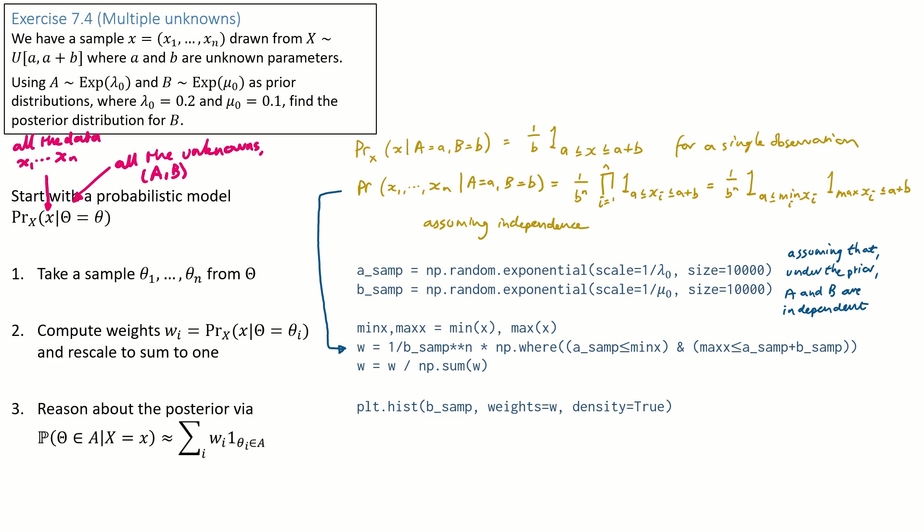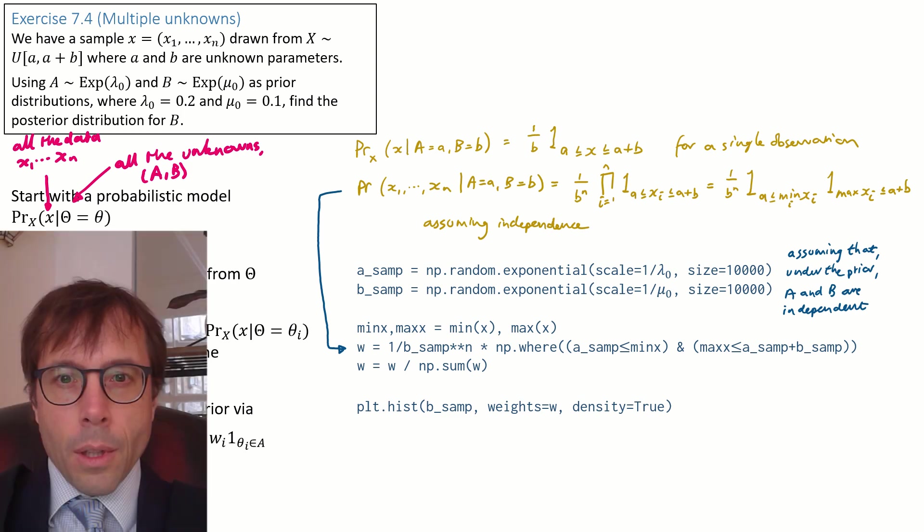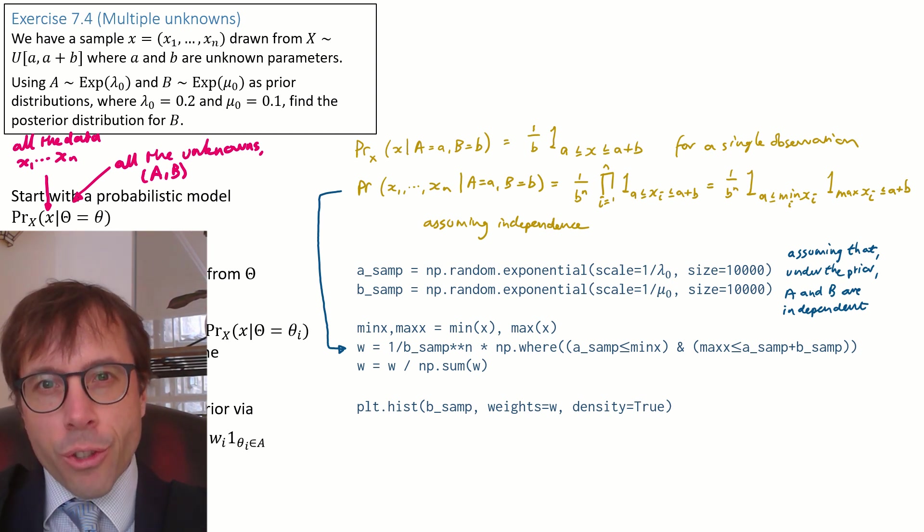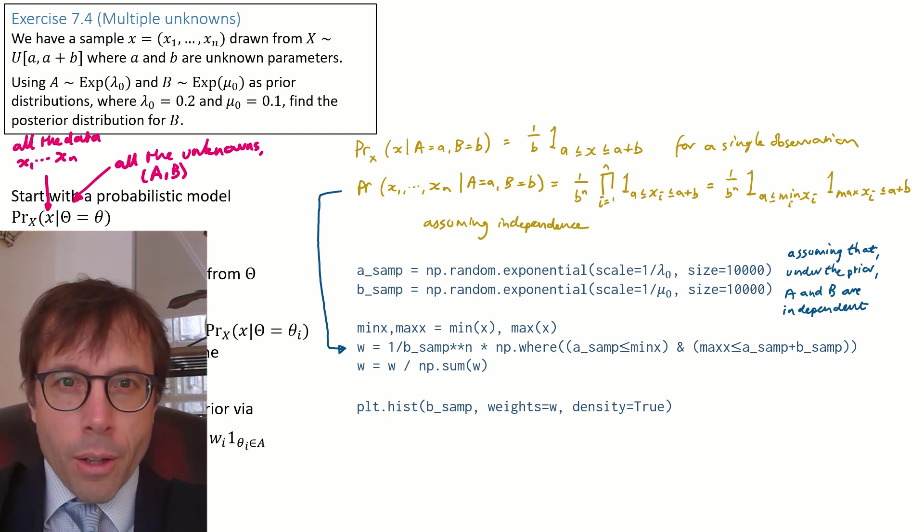The final step is to draw whatever conclusions we want using our weighted samples. This is where the subtlety about multiple unknowns comes in. The question asked us, find the posterior distribution of B, but what we've actually found is the posterior distribution of the pair AB. So all I'm going to do is ignore the A values. If you have a function that returns a pair of random numbers, and you only want to use one of them, you just ignore the other. That's exactly what I'm doing here, ignoring the A part of the AB pair, and just plotting the B part. In code, this subtlety is so subtle that it probably either seems completely obvious or completely mystifying. I'm going to switch over now to the mathematical way of doing this, and then we'll see that it's a solid chunk of work actually, and that might make it clearer.